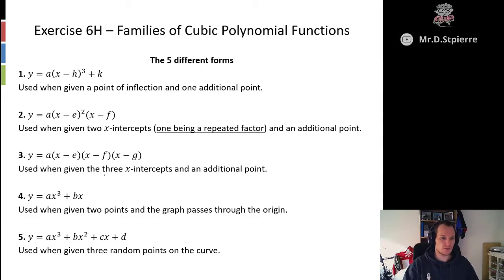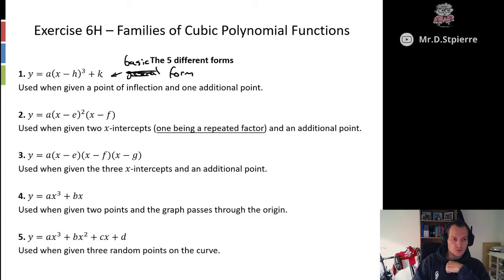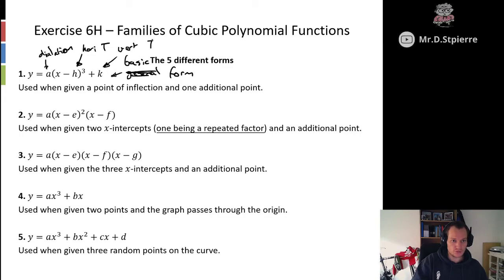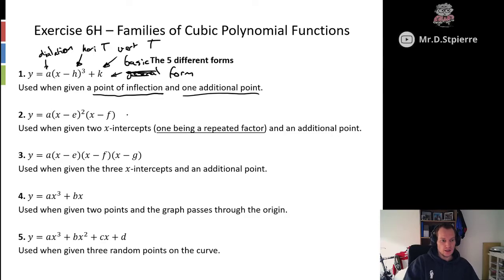We have five main different forms. The first is what I call the basic form: y equals a(x minus h) cubed plus k. This is where we have a dilation, a horizontal translation, and a vertical translation. We can use h and k to identify where our point of inflection is. If we know the coordinate of one other point — so if we know a point of inflection and one additional point — we will use the basic form.